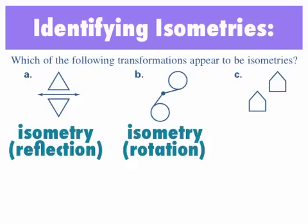And then C, these two pentagons again appear to be congruent. Because they seem to be congruent, we would call it an isometry, and this type of transformation is a translation.